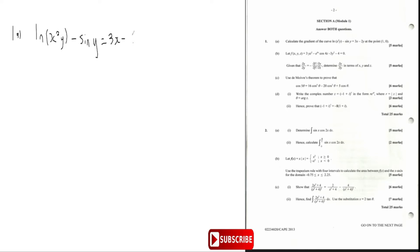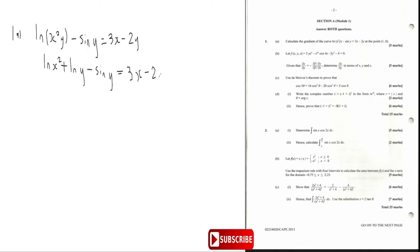First, I know that with log functions I can separate them. So I can rewrite ln(x²y) as ln(x²) plus ln(y). The reason I want to separate them is so I don't have to use the product rule or composite rule — I can differentiate each term normally. Then I write minus sin(y) equals 3x minus 2y.